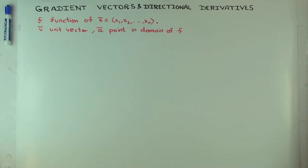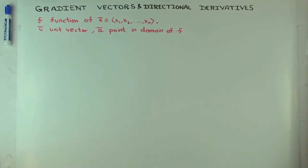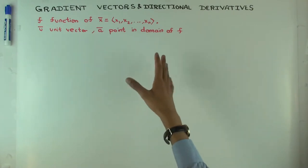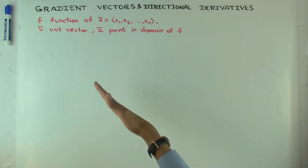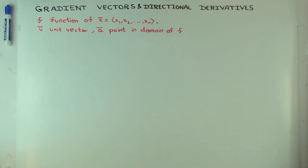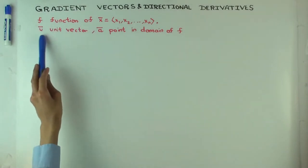The gradient vector is just the derivative of a function. Except now, since you have a function of multiple variables, the derivative will be a vector, so it will capture both a magnitude and a direction. The gradient vector, if it's non-zero, has a direction to it and also has a magnitude. And the directional derivative is the derivative along a particular direction. In order to specify a directional derivative, you need to specify the direction, which you do using a unit vector.